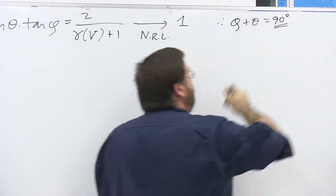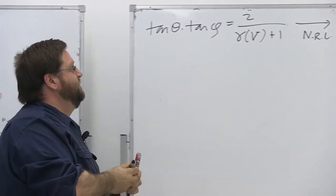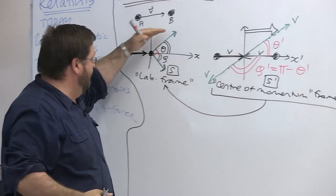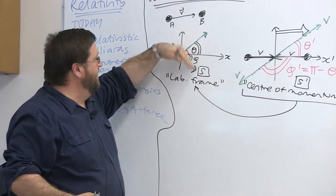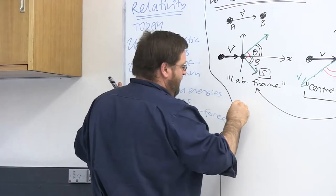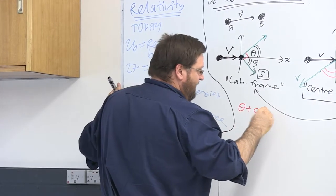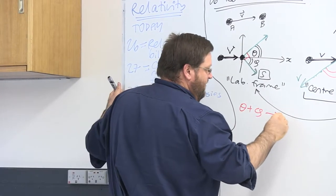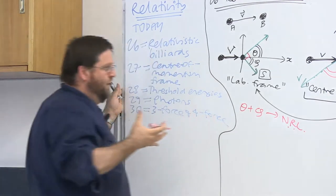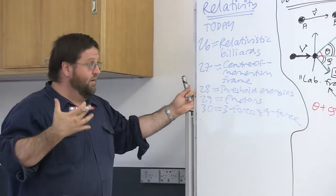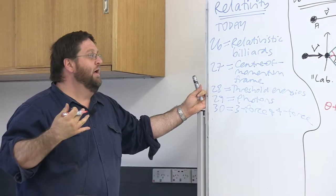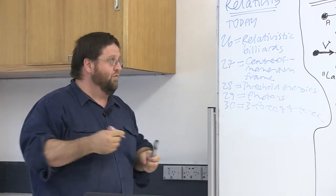As Rindler notes, as every billiard player knows: when tan(theta)·tan(phi) equals 1, the opening angle theta plus phi is 90 degrees. This means when you strike a stationary billiard ball, the two balls fly off at precisely 90 degrees to each other. This 90-degree opening angle is a signature that the collision is non-relativistic. In the relativistic case, as the gamma factor increases, the right-hand side of the formula decreases below 1.